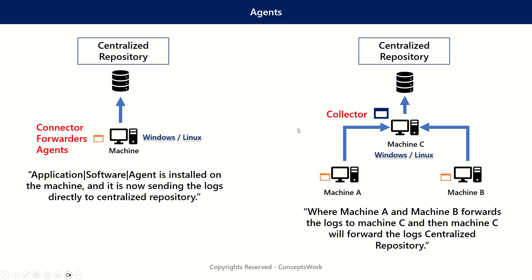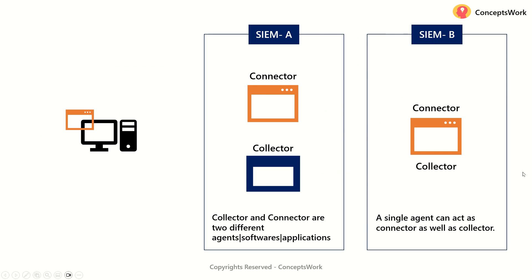This architecture is where the agent is termed as a collector, whereas the direct agent is typically termed as a connector. While evaluating a SIEM solution, make sure you ask your vendor how many agents are required — whether connector and collector are two different agents or just one agent that can act as both.